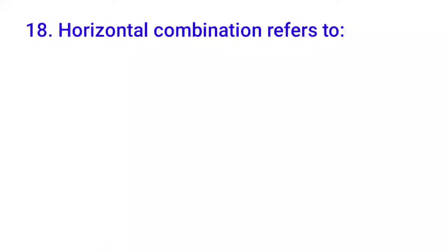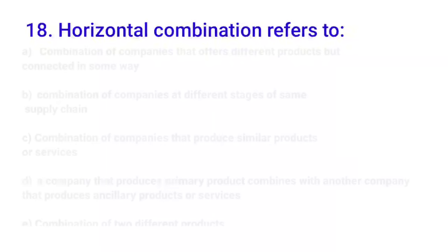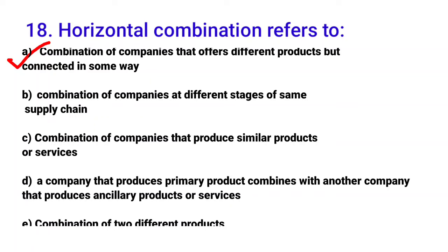Eighteenth MCQ: 'Horizontal combination refers to' — option A: combination of companies that offer different but connected products — that is lateral combination; for example Flipkart (e-commerce) and PhonePe (payment) have a connected relationship. Option B: combination of companies at different stages of the same supply chain — that is vertical combination; for example a coffee shop combining with a coffee seeds producer.